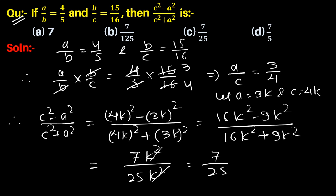k squared and k squared cancel, so the answer is 7 upon 25, which is the required answer. Option C is the correct answer.